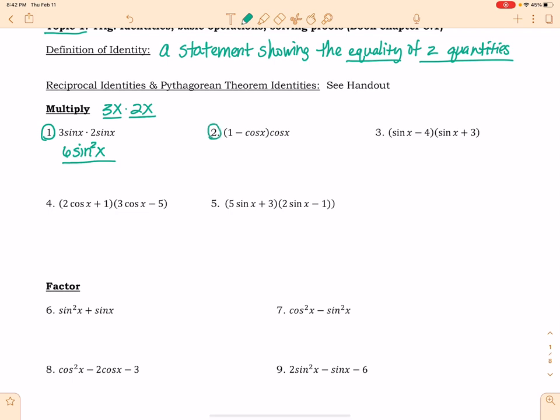When we look at number 2, we have to distribute this cosine x. So 1 times cosine x is cosine x. Cosine x times cosine x, cosine squared x.